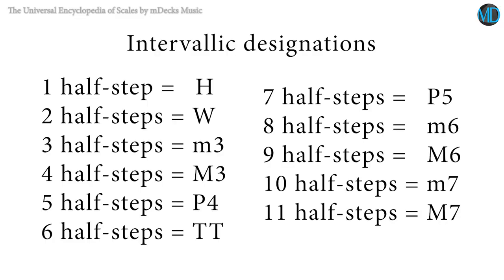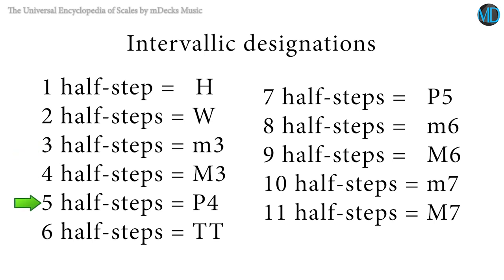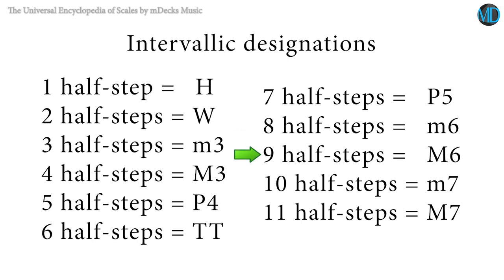Here's the list of intervallic designations: half step is written as H, two half steps is a whole step, three half steps is a minor third, four half steps is a major third, five half steps is a perfect fourth, six half steps is a tritone, seven half steps is a perfect fifth, eight half steps is a minor sixth, nine half steps is a major sixth, ten half steps is a minor seventh, and eleven half steps is a major seventh.